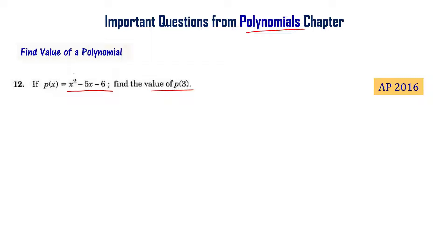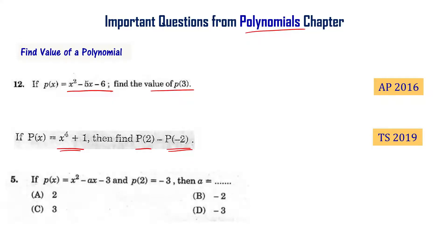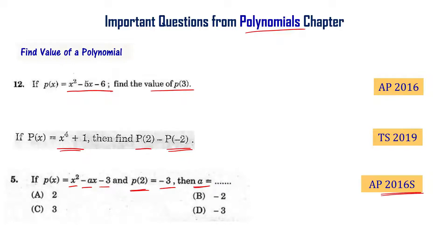This is from AP final exam 2016. If p of x equals x to the power 4 plus 1, then find p of 2 minus p of minus 2 — from Telangana final exam 2019. If p of x equals x squared minus ax minus 3 and p of 2 equals minus 3, then what is the value of a? This is from AP final exam 2016 supplementary.